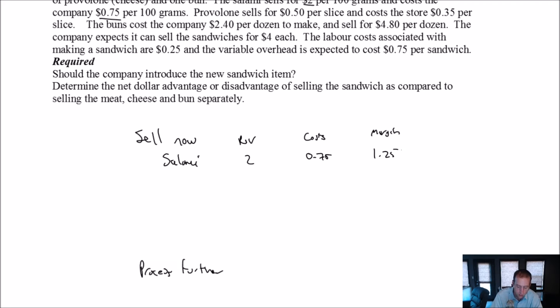So we're making $1.25, and if we choose to put it in a sandwich, it'll be different from that, obviously. Provolone, which is our cheese, is 50 cents, is what we sell it for, and when we cut it up, its cost to us by the time it's all done and ready is 35 cents. So we're making 15 cents on the Provolone.